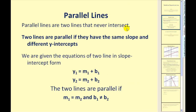Parallel lines are two lines that never intersect. Two lines are parallel if they have the same slope and different y-intercepts. So if they're both in slope-intercept form, m1 must equal m2, and b1 cannot equal b2.